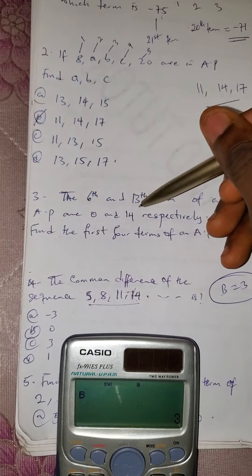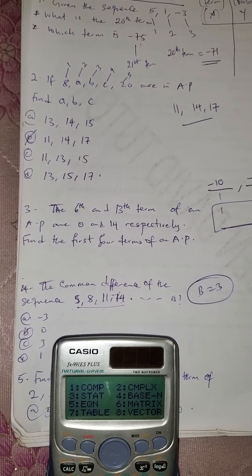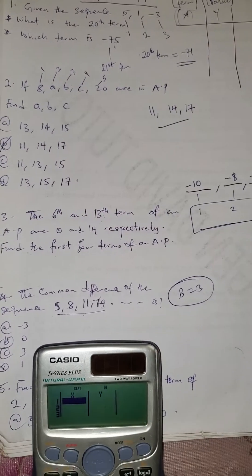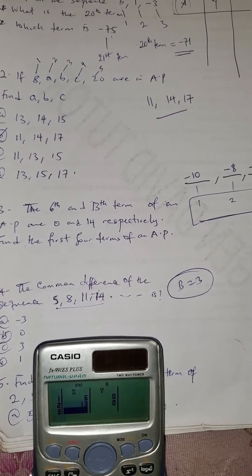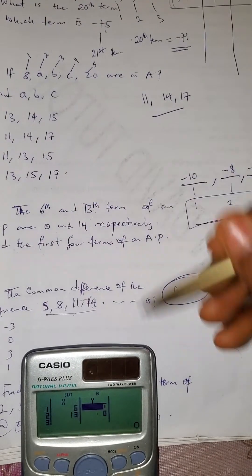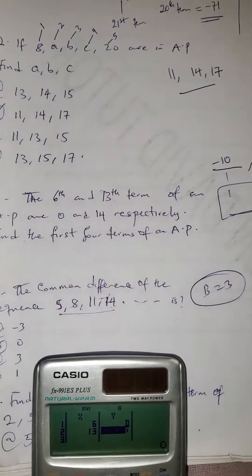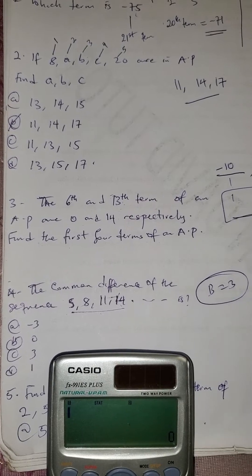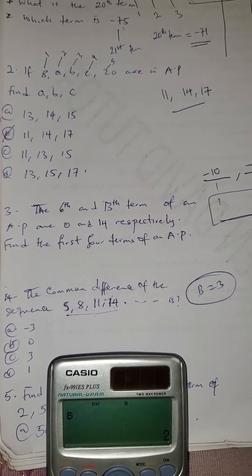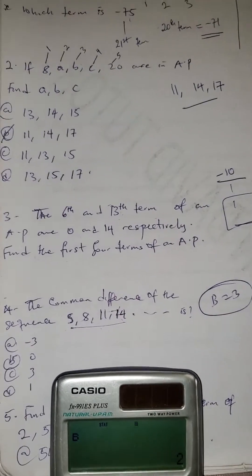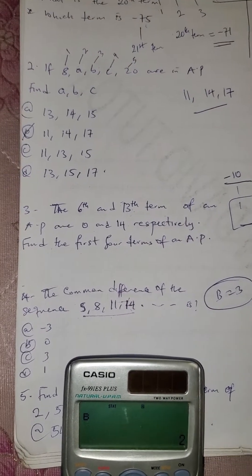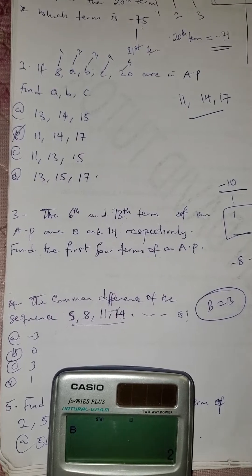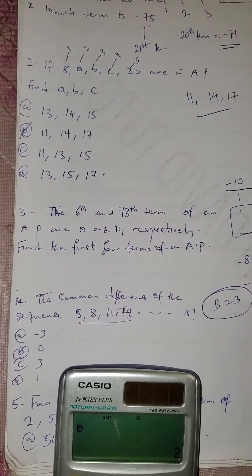Now assume you need to find the common difference when you are only given the 6th and 13th terms, not the full sequence. Press mode, go to stats, go to AP, and insert the 6th term as 0 and the 13th term as 14. Press AC. Then press shift 1, go to VAR, press B, and press equals — the common difference is 2. You can verify: minus 8 minus minus 10 equals minus 8 plus 10 equals 2. That is how to find common difference on the calculator.